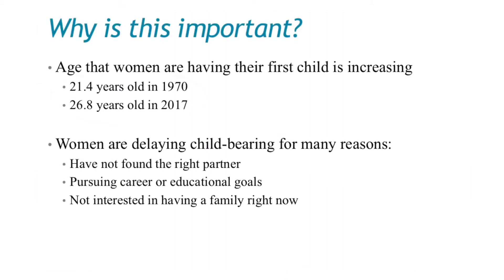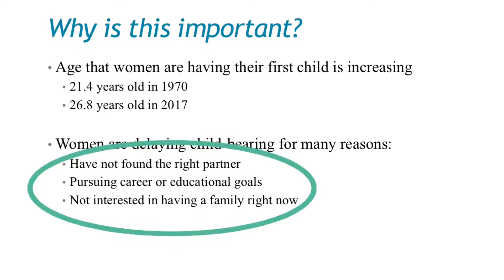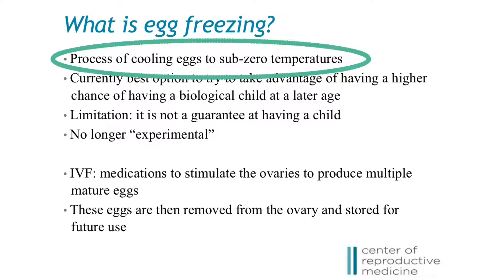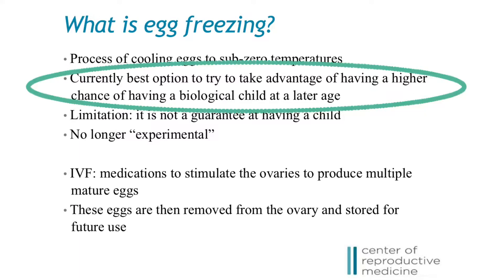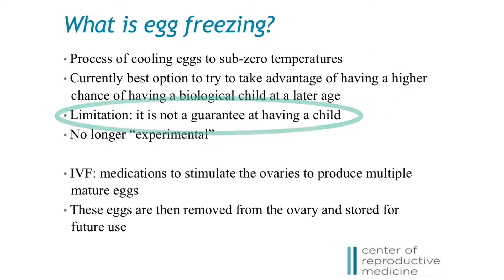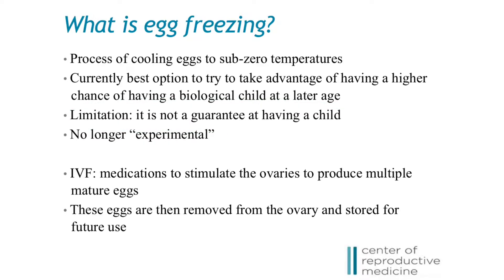According to the National Vital Statistics, women have continued to delay having children over the last 50 years. There are many reasons for this, ranging from not having found the right partner, to pursuing career or educational goals, or not being ready to start a family at that time. Egg freezing is the process of cooling eggs to sub-zero temperatures to preserve reproductive potential. This technology is currently our best option that allows women the opportunity to have biological children later in life, but there are limitations — first, it is not a guarantee of having a biological child. It is an option that gives us some control over increasing the chances of having biological children in our more advanced years, which we did not have before.